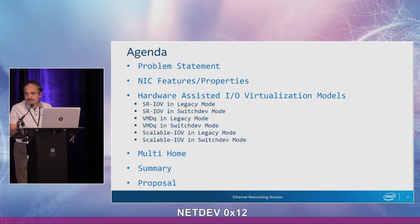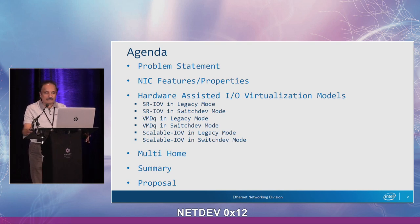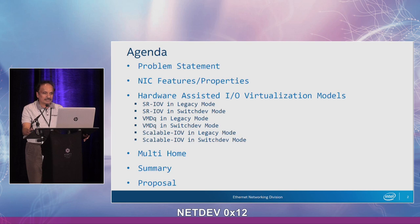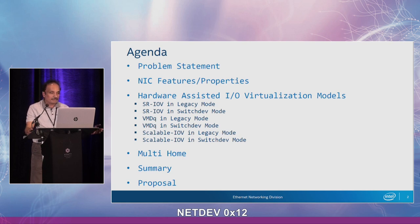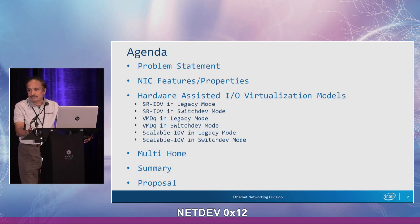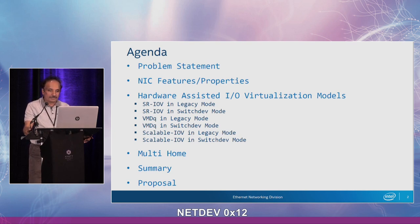So the agenda: I will start with a problem statement that describes the issues we see with host control of virtualized network interfaces. Then we'll quickly go over the features and properties exposed by standard NICs without IO virtualization. Then I will go over the three different hardware-assisted IO virtualization models and the set of properties and features that can and cannot be controlled in these three models from the host when the network interfaces are assigned to a VM or a container. We'll also talk about switch dev mode and how it helps with the configuration of certain features. If time permits, we'll go into some multi-home scenarios. Finally, I will conclude with a summary slide and some proposals on how to address the issues raised in the problem statement.